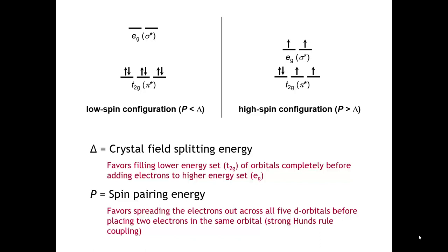Let's consider a transition metal ion in an octahedral environment so that the d-orbitals are split into the triply degenerate T2g orbitals — dxy, dyz, dxz — and at a higher energy, the doubly degenerate eg orbitals, the dx²-y² and the dz². Now, for the first electron that goes in, there's no ambiguity. It's going to go into one of the T2g orbitals. For the second and third electrons, it's the same story — they both go into the T2g orbitals, and Hund's rule tells us they all have the same spin, let's say spin up.